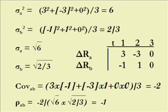So let's look at our data. The variance is the sum of those differences squared divided by the number of cases, and that turns out to be six for a.